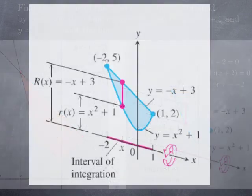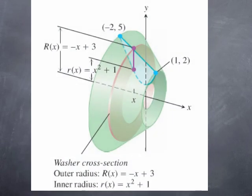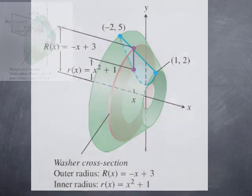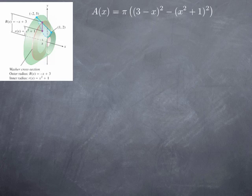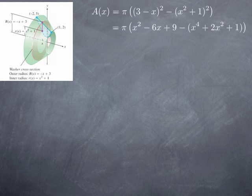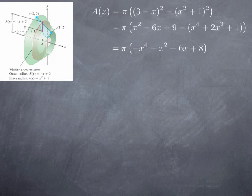When we perform this rotation we obtain a washer where the outer radius is R(x) = 3 − x and the inner radius is r(x) = x² + 1. The area of the cross-section is π times the difference of the squares: (3 − x)² − (x² + 1)². Expanding: the square of (3 − x) is x² − 6x + 9, and the square of (x² + 1) is x⁴ + 2x² + 1. Simplifying the expression inside the parentheses, we obtain π multiplied by (−x⁴ − x² − 6x + 8).